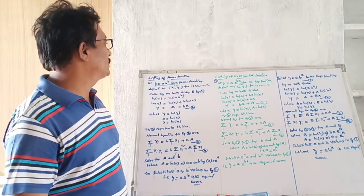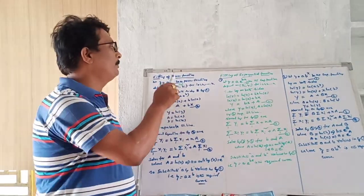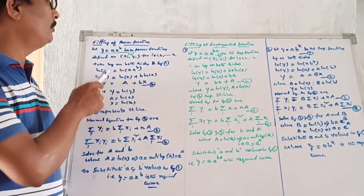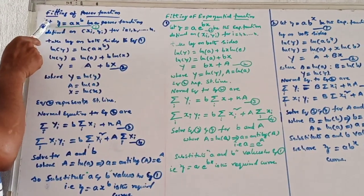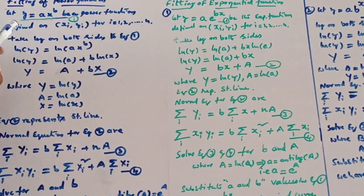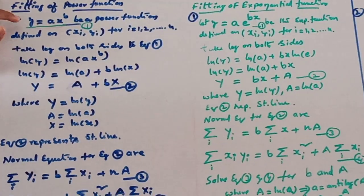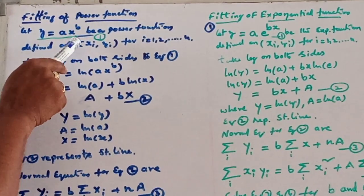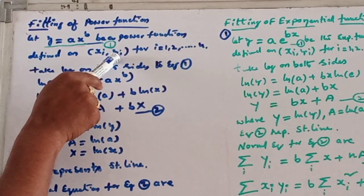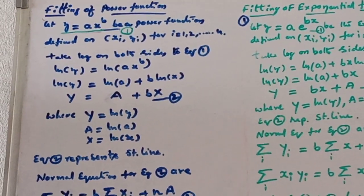Today we are going to discuss the fitting of a power function of the form y equal to a times x power b. This function is defined at points x_i comma y_i for i equal to 1 to n.